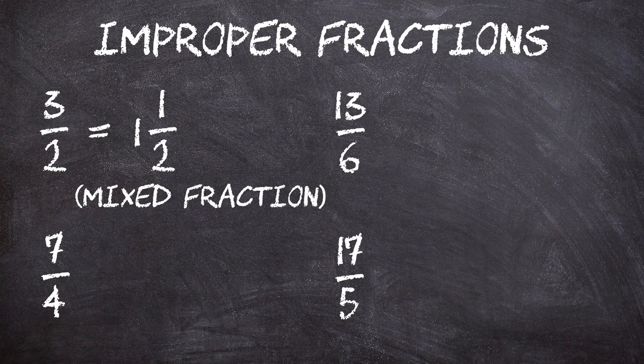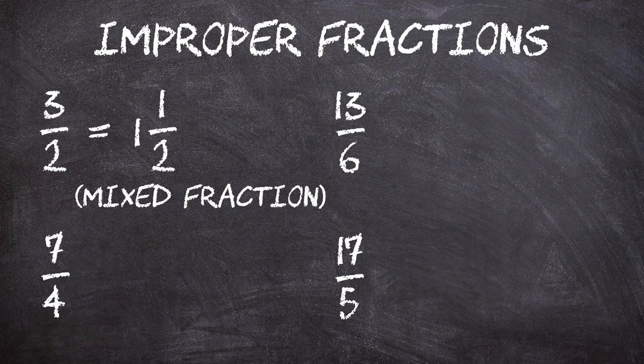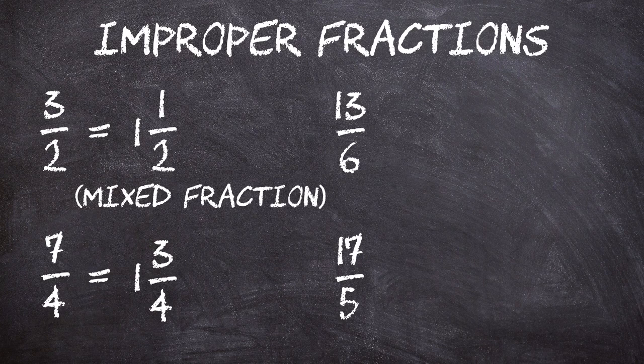So how do we convert improper fractions into mixed fractions? We just need to divide the numerator by the denominator, write the whole number out the front, and then put the remainder on top of the denominator. So for example, seven over four — how many times does four go into seven? Just once, with a remainder of three. So we write down the one first, and then we write down the remainder three over the top of the denominator four. One and three-quarters is the same as seven quarters.